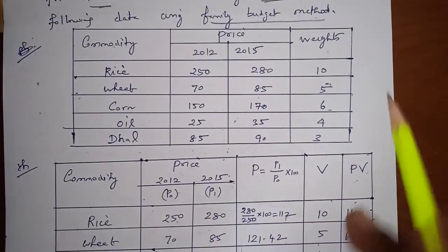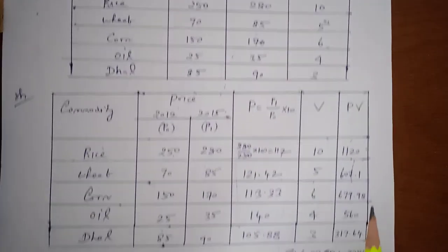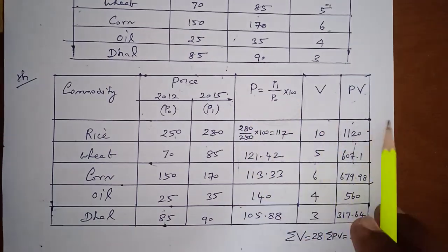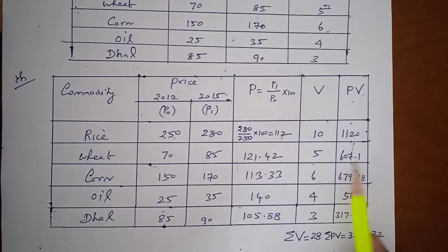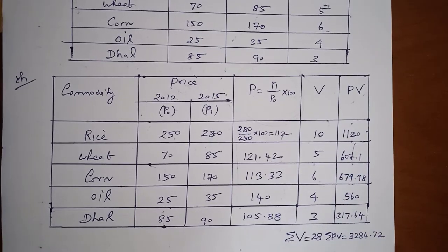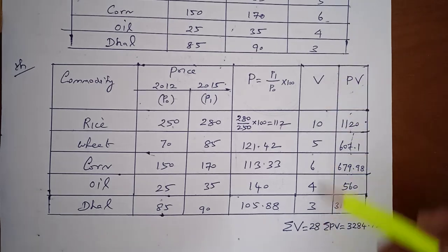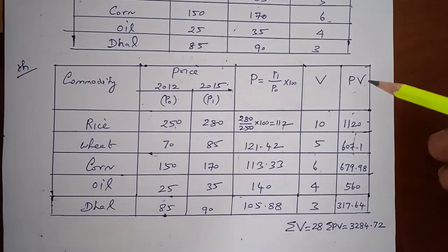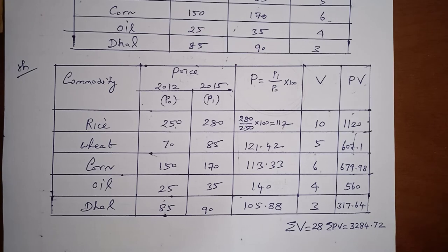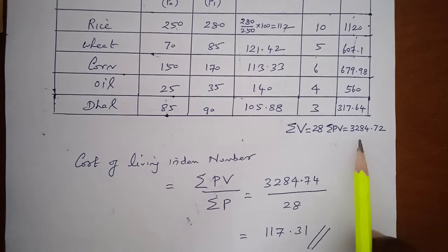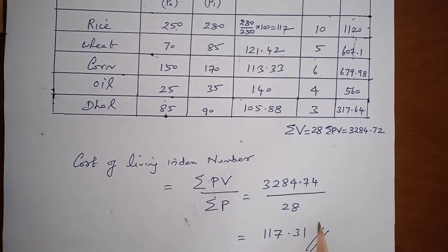V represents the corresponding weights. The weights for each commodity are taken as 10, 5, 6, 4, and 3. Multiplying the capital P values and weights (P and V), the PV products are 1120, 607.1, 679.98, 560, and 317.64. The sum of all V values is 28, and the sum of all PV values is 3284.72. Applying the cost of living index number formula — sigma PV divided by sigma V — gives 3284.72 divided by 28, and the final answer is 117.31.